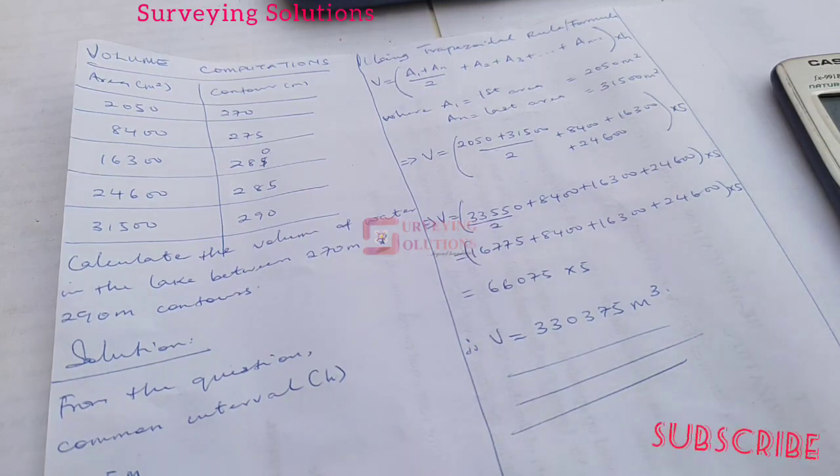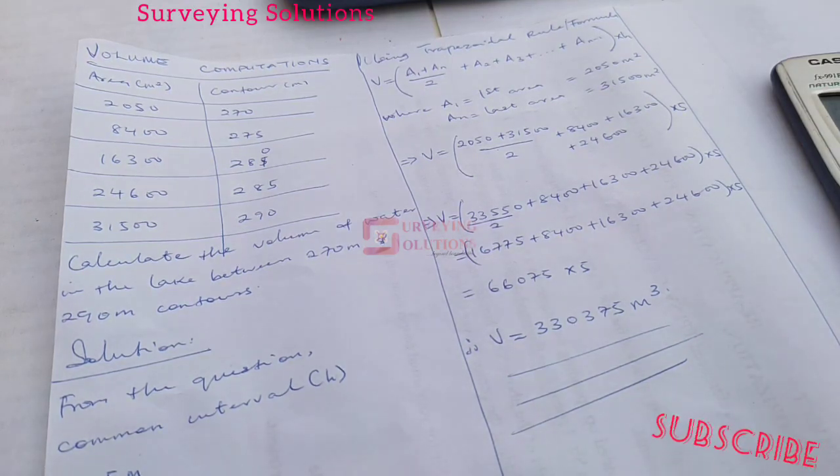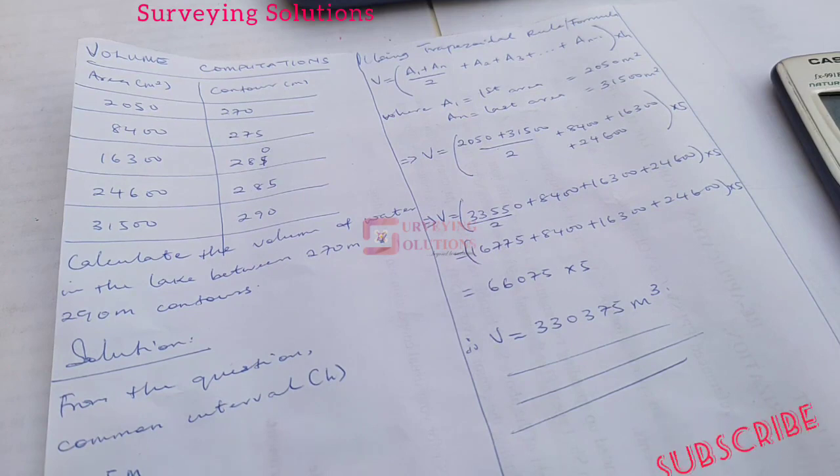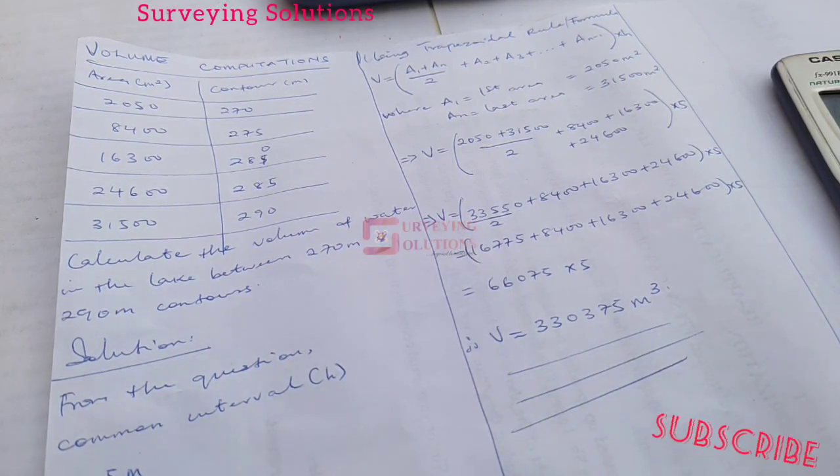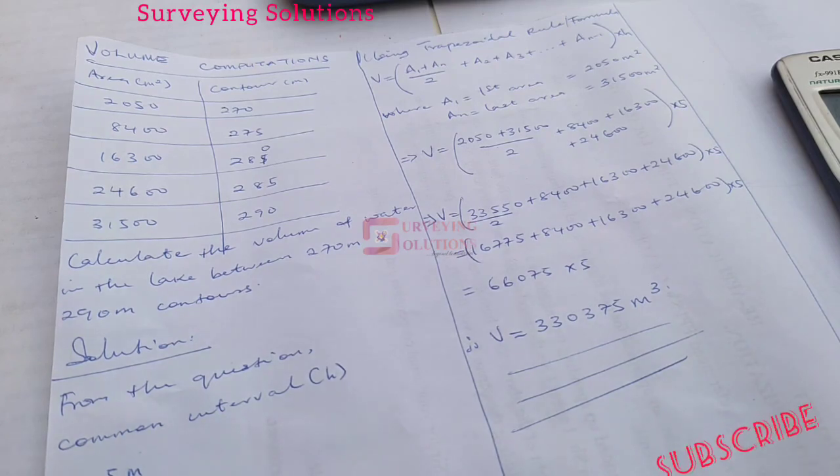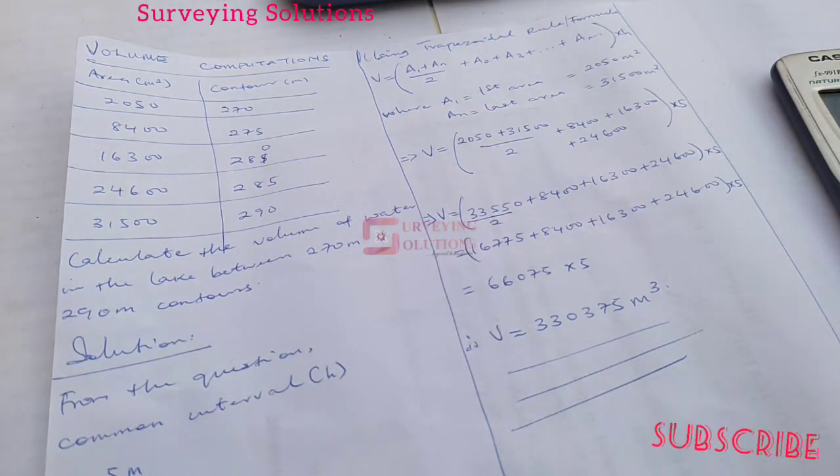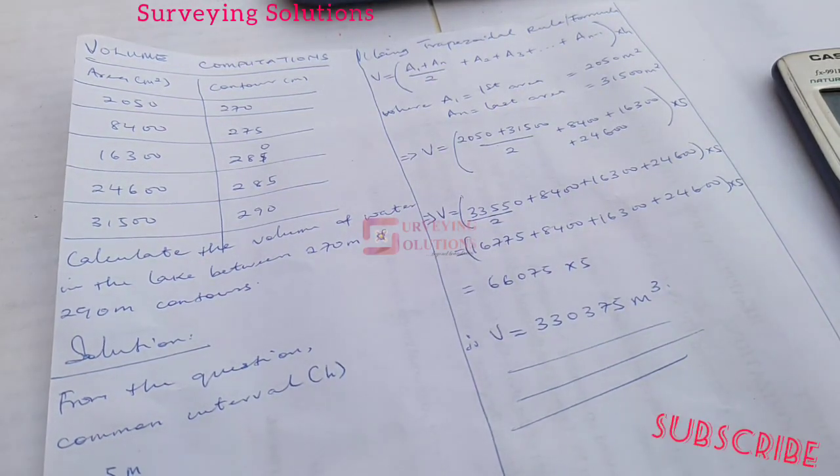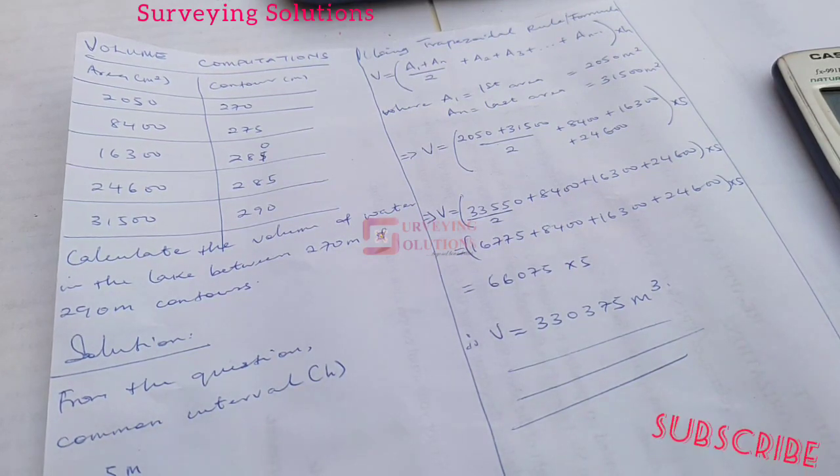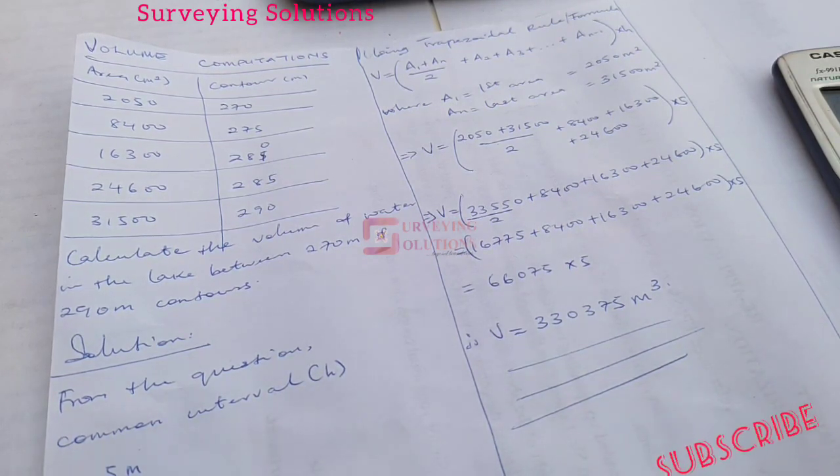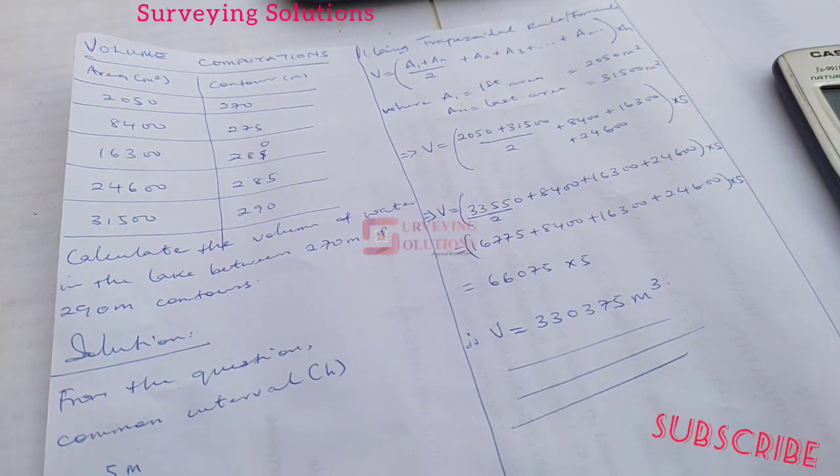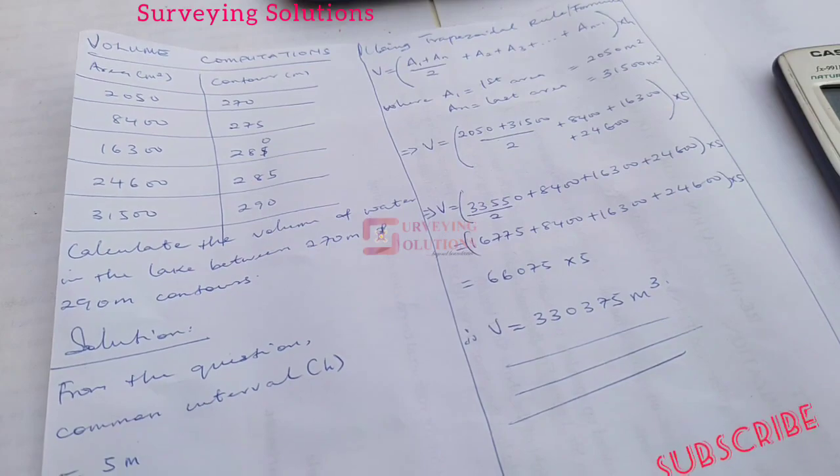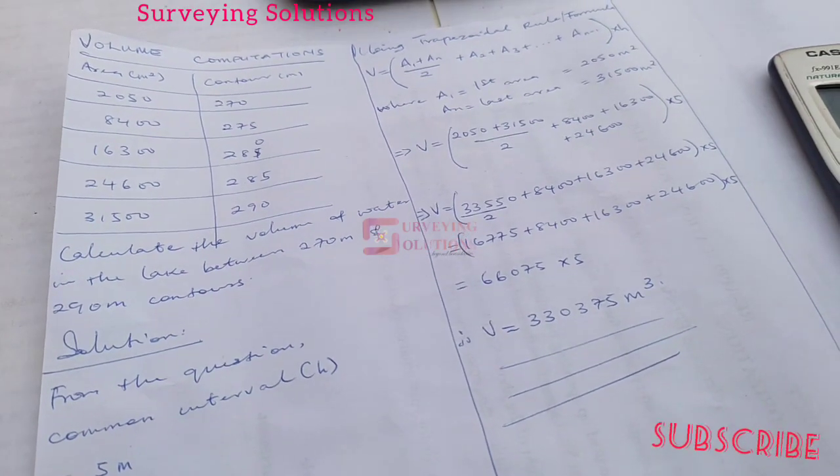Now there are different methods to determine the volume of any irregular object, maybe the volume of earthwork or the volume of a dam or any other quantity whose volume you want to determine. On today's video, we are going to show you how to determine the volume of a water body or the water in a lake using the trapezoidal formula or the trapezoidal rule.